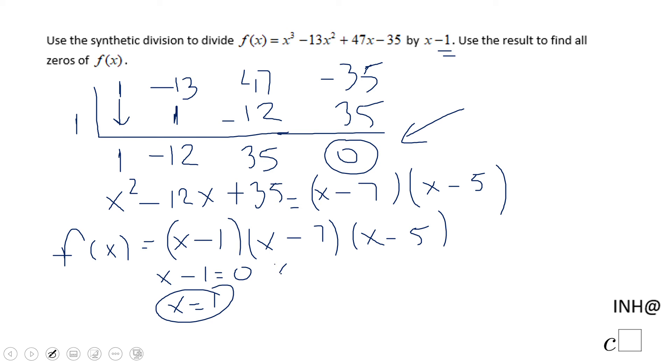x minus 7 equals 0 gives us x equals 7. And x minus 5 equals 0 gives us x equals 5.